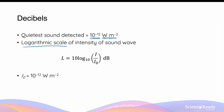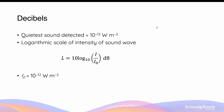Decibels is a unit of sound intensity expressed on a logarithmic scale. Specifically, the decibel value equals 10 times log base 10 of the intensity of sound being measured divided by I₀, which is the lowest intensity of sound that can be heard by the human ear. By doing this calculation we can convert intensity into a number in decibels.